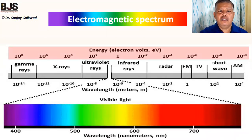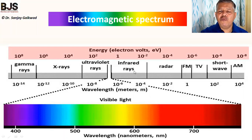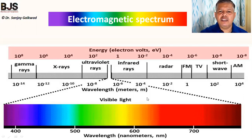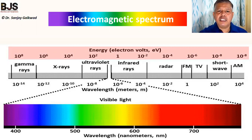Now, what is the electromagnetic spectrum? Starting from gamma rays to AM waves — gamma rays have very high energy but very low wavelength. As we go from gamma rays, then X-rays, ultraviolet rays, visible rays, infrared rays, radar waves, FM, TV, short waves, and AM. In the visible range, the wavelength is from 345 nanometers to 800 nanometers. Below 345 nm to 200 nm is ultraviolet, and above 800 nm is infrared. These radiations fall on the molecule, and in visible light, this energy gets absorbed by the molecule.